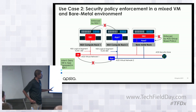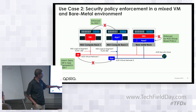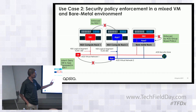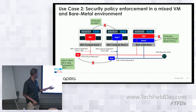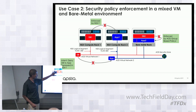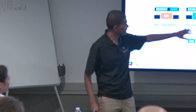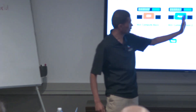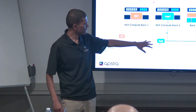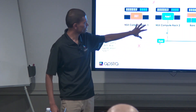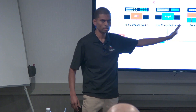Here I have a use-case depicting a small topology which has two networks — logically two segments. One is a database network, another one is an application network. Both have heterogeneous workloads: the database network has a database VM managed by NSX and a database bare metal that is outside of NSX management domain in a bare metal rack. Similarly the app network has an app VM managed by NSX and an app bare metal not managed by NSX.